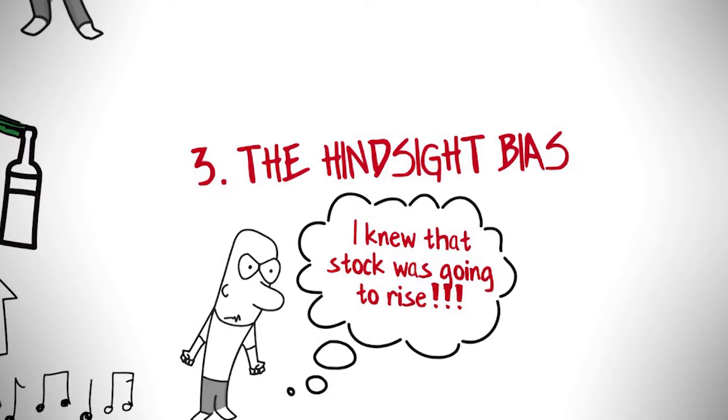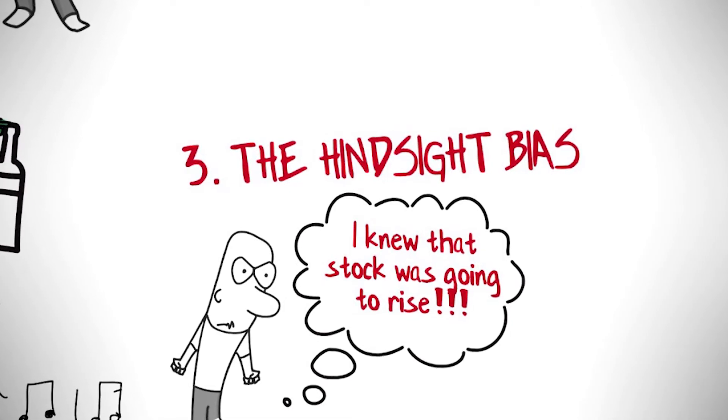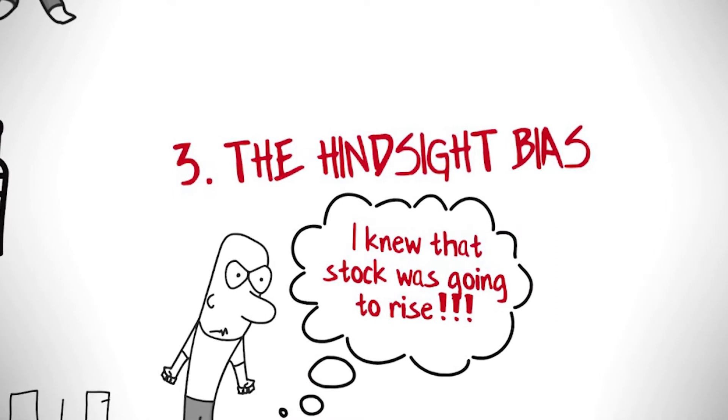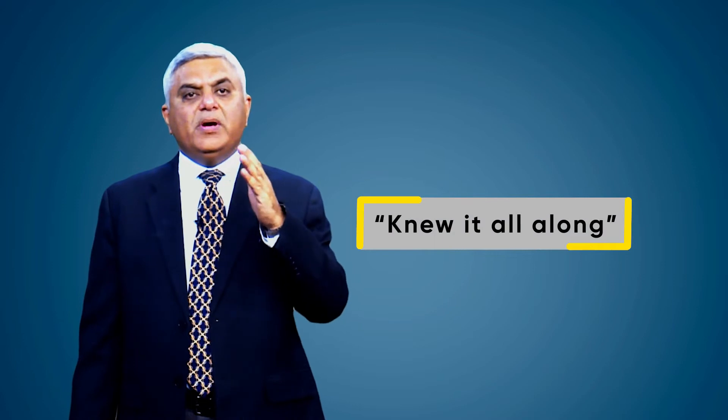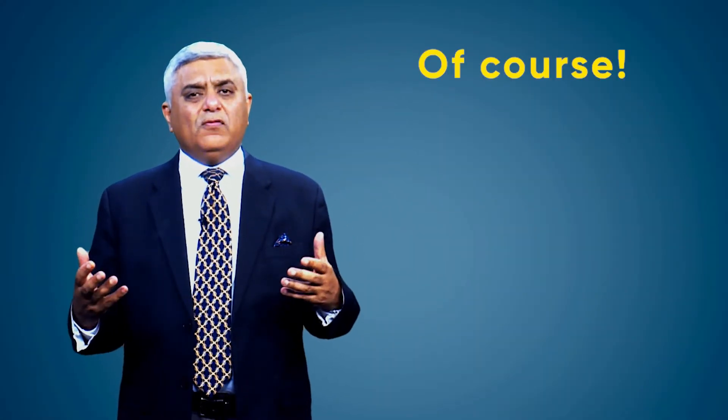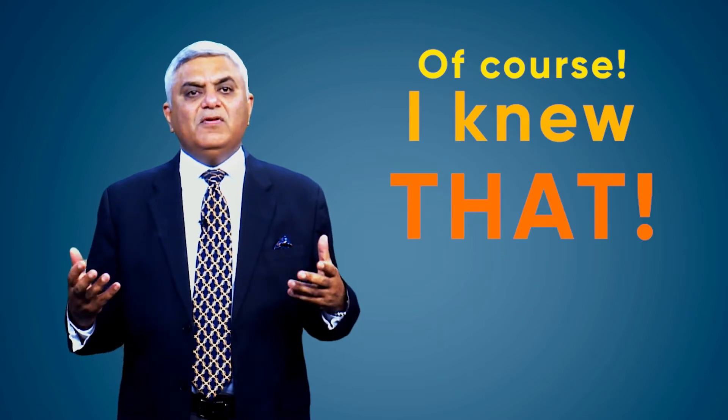The hindsight bias is a common cognitive bias that involves the tendency of people to see events, even random ones, as more predictable than they are. The tendency to look back on events and believe that we knew it all along is largely prevalent. Following exams, students often look back on questions and think, of course, I knew that, even though they missed it the first time around.